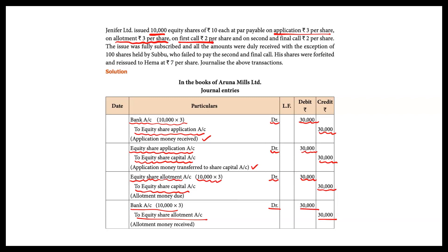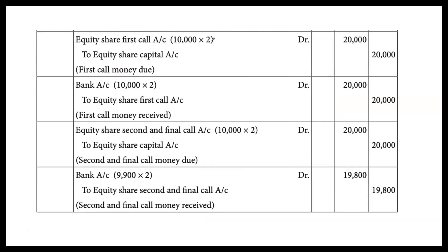For the first call at Rs 2 per share: Equity Share First Call Account debit 10,000 into 2 = Rs 20,000, credit Equity Share Capital Account. Bank entry: Bank Account debit Rs 20,000, to Equity Share First Call Account credit Rs 20,000.